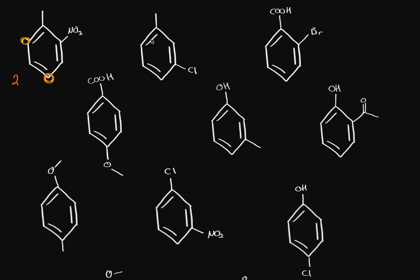For this second molecule, we have a methyl group that is ortho and para directing — so it directs to these positions. The chlorine also directs to the ortho and para positions; although it's deactivating and electron-withdrawing, it's still ortho and para directing. We'll end up having up to three products; however, the product squeezed in between the methyl and chlorine is only trace amounts because it's hard to fit between two groups.